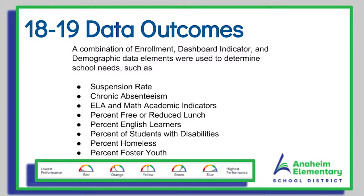For the 18-19 year, data consisting of a combination of enrollment, dashboard indicator, and demographic data elements were used to determine school needs. These categories include suspension rate, chronic absenteeism, ELA and math academic indicators, percent free or reduced lunch, percent of English learners, percent of students with disabilities, percent of homeless students, and percent of foster youth.